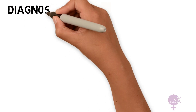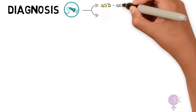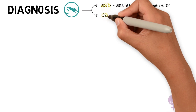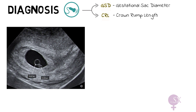Diagnosis is carried out by doing a transvaginal ultrasound scan, where we look at two main measurements: the GSD, which is the gestational sac diameter, and the CRL, the crown-rump length. Looking at this image, we can see the gestational sac, which is the large cavity of fluid surrounding the embryo, and the yolk sac, which is a membrane outside the embryo connected by a tube — the yolk stalk — which passes through the umbilical opening to the midgut of the embryo, acting as the primitive placenta to supply nutrients.